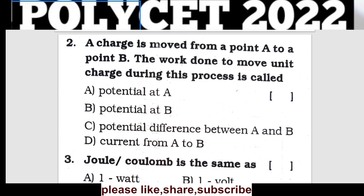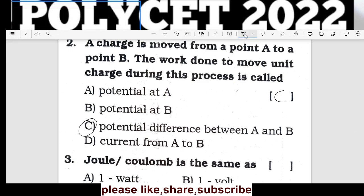Question 2: A charge is moved from point A to point B. The work done to move unit charge during this process is called the potential difference between point A and point B. Option C is the correct answer.